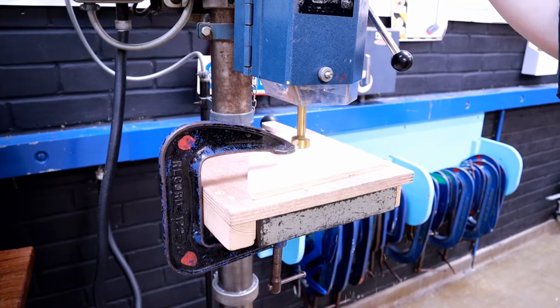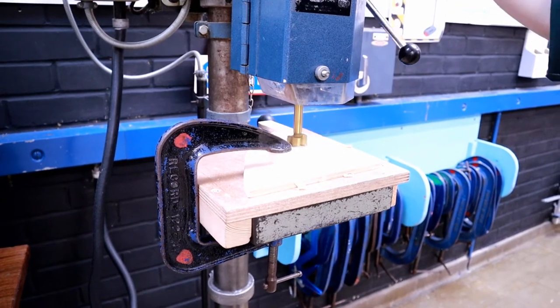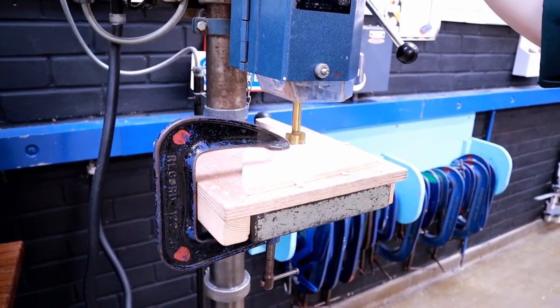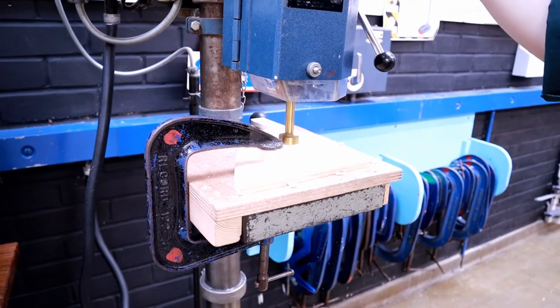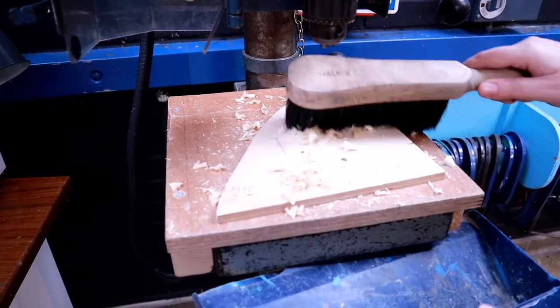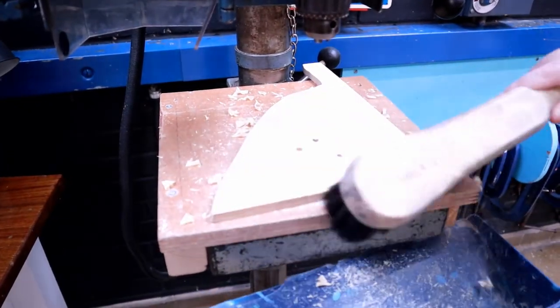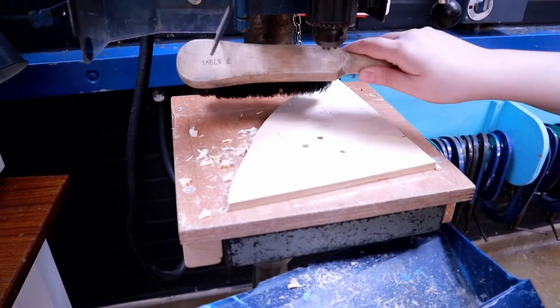I'm using a forstner bit here to drill halfway through my pine shape. It creates quite a lot of sawdust, so you need to make sure you use a dustpan and brush to clear up the mess.